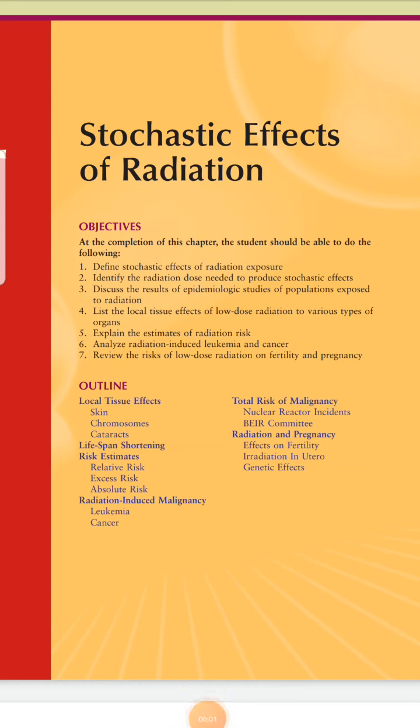In our previous lecture we covered the early effects of radiation, or the deterministic effects. Now we will start our new chapter on the stochastic effects, or the late effects of radiation. The response will be chronic, whereas the response was acute in the deterministic effects. In today's lecture we will cover the local tissue effects on the skin, the chromosomes, and radiation-induced cataracts.